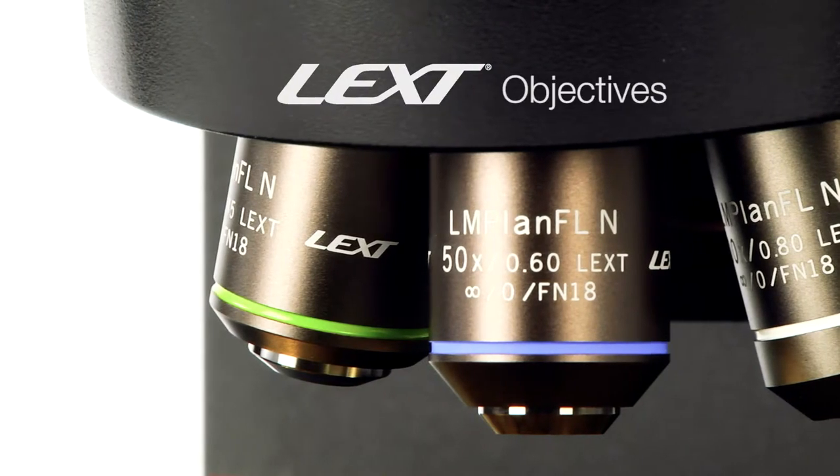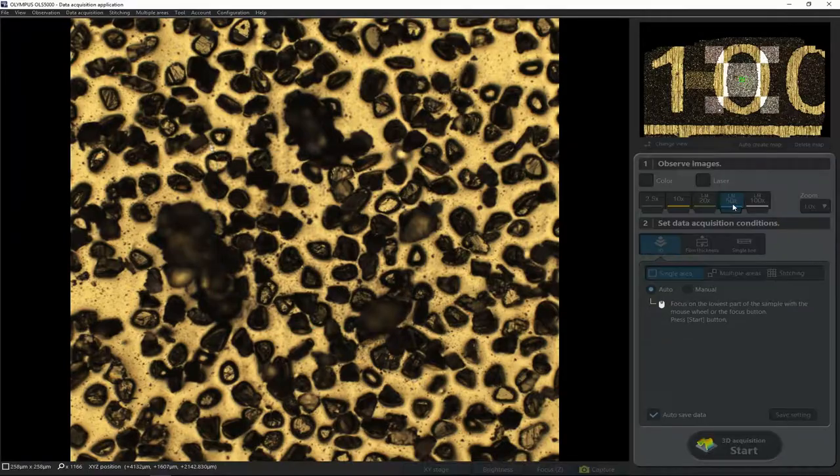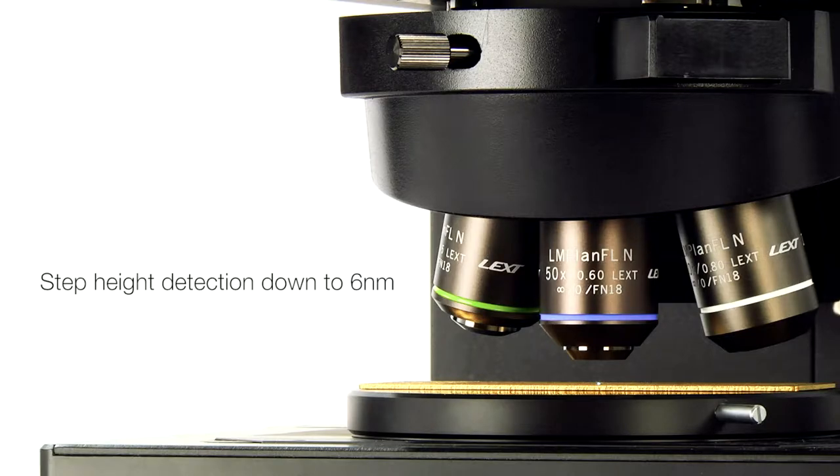Equipped with dedicated Lexed objectives designed for surface metrology, the OLS 5000 Laser Microscope can detect a step height difference as small as 6 nanometers for highly accurate measurements.